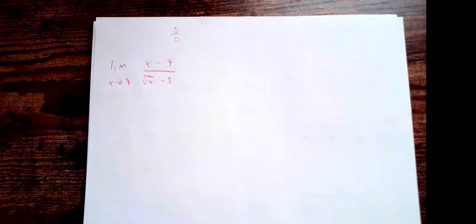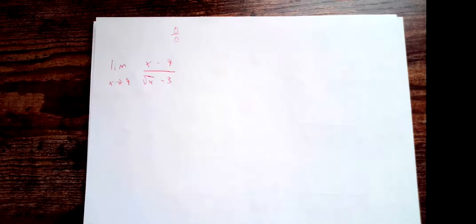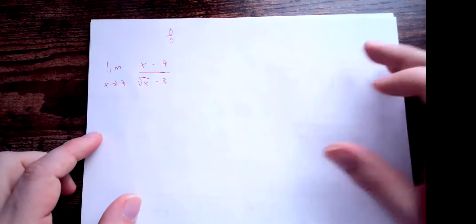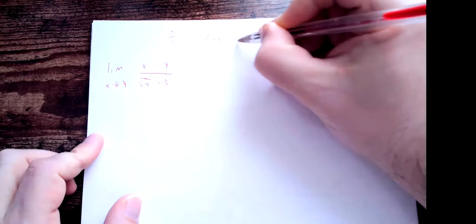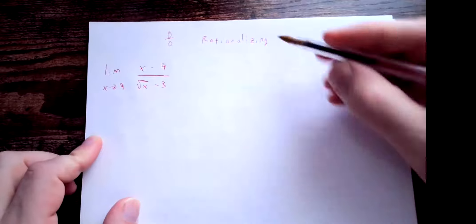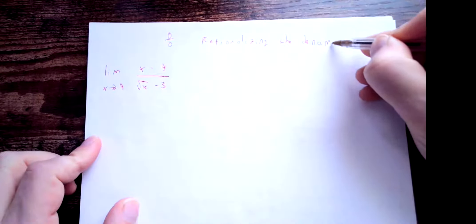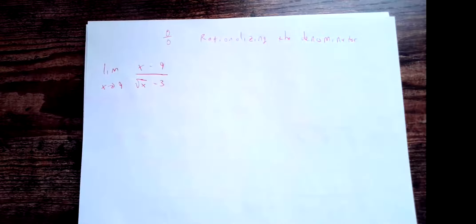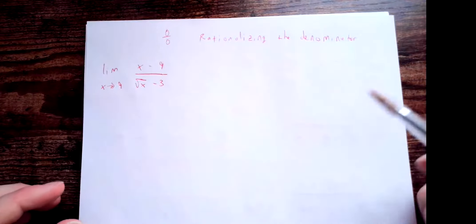We need to re-express this so we don't get 0/0. We can try factoring the numerator, but there's a technique that works well here: rationalizing the denominator. That means eliminating the square root in the denominator to get a rational expression. Mathematicians like to multiply by 1, so we multiply top and bottom by (√x + 3) over (√x + 3).